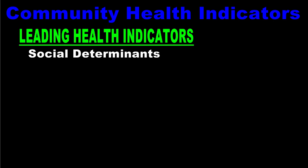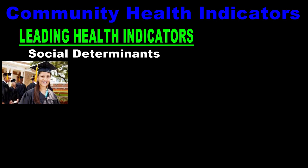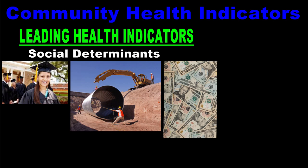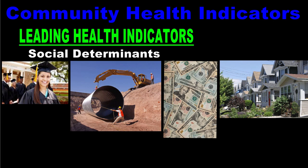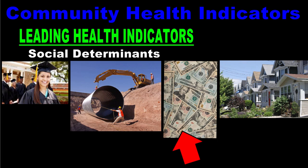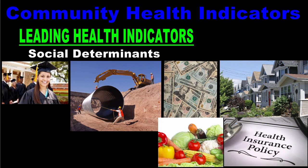The first leading health indicator is social determinants like education, jobs, wealth, and safe housing and neighborhoods. Education is one of the strongest indicators of good health. Statistics show that individuals who get a good education are more knowledgeable about what it takes to maintain good health. They are more likely to be able to get high paying jobs that allow them to buy homes in safe, low crime neighborhoods and purchase nutritious foods and good health insurance. So while social determinants may seem unrelated to health at first glance, they can actually play a major role in the health of a community.